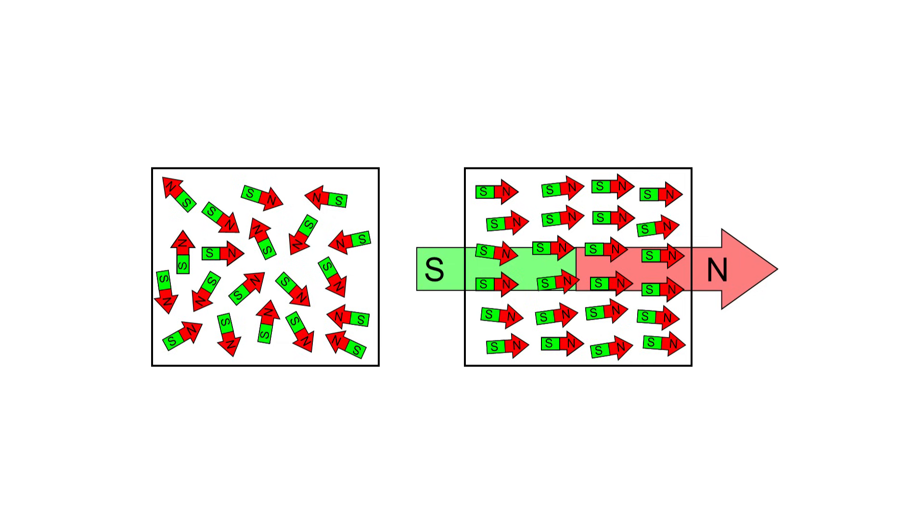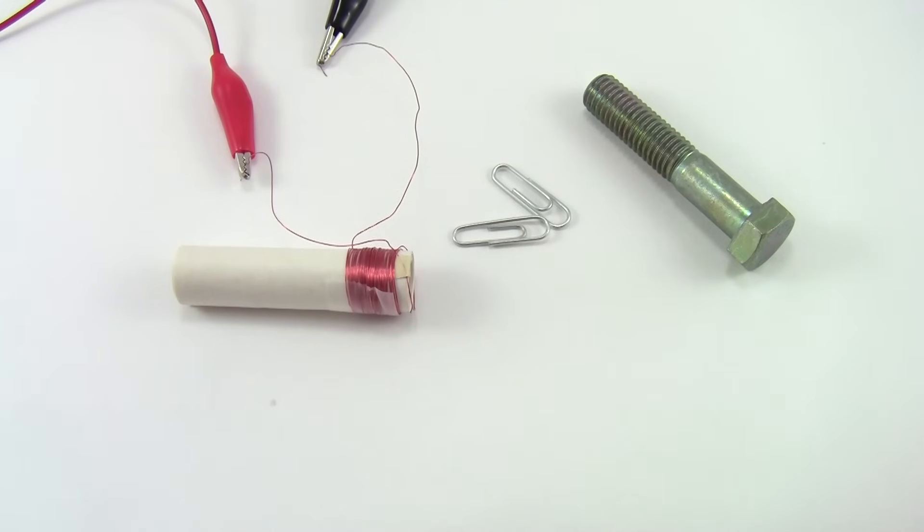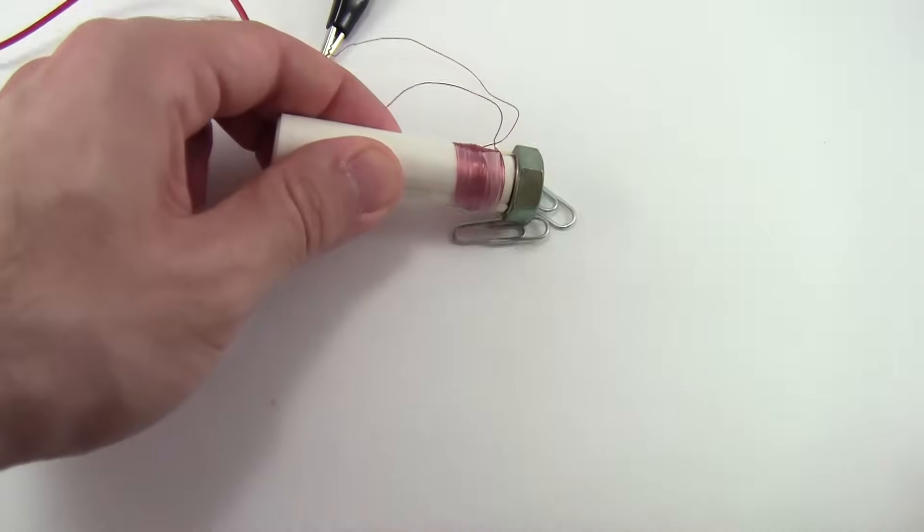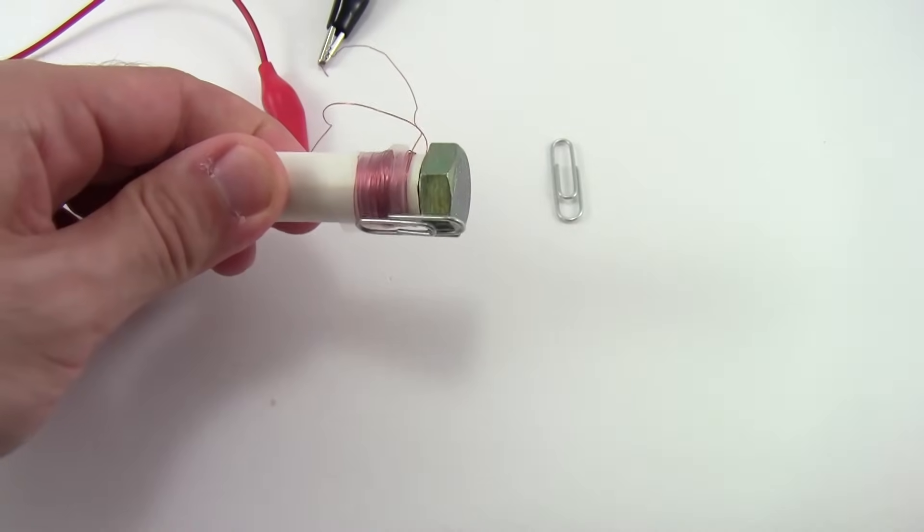However, in the presence of an external magnetic field, these domains align with each other and the external field, making the overall field much stronger. Watch what happens when I insert this iron bolt into the core of my electromagnet. Now it's finally strong enough to pick up a paper clip.